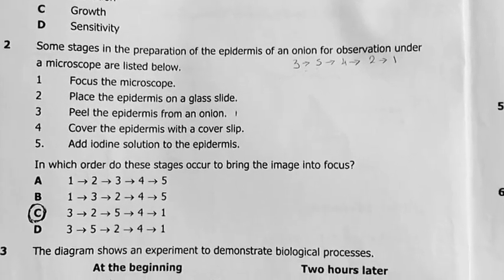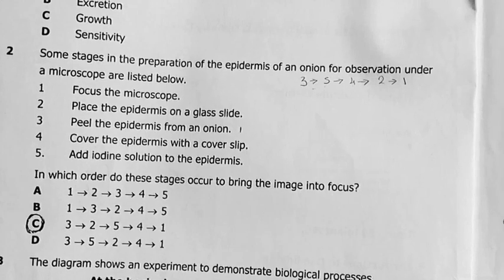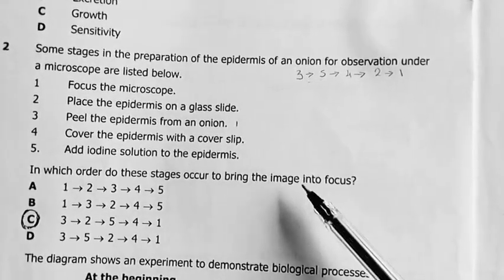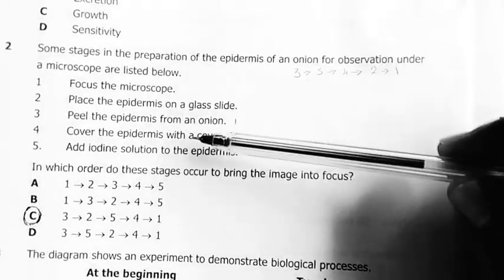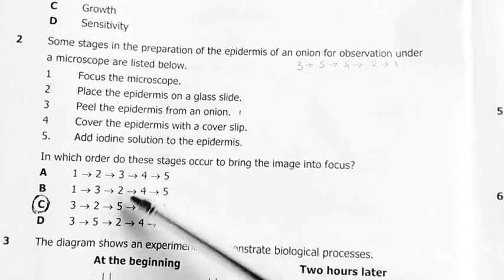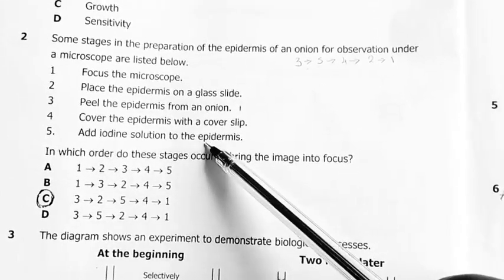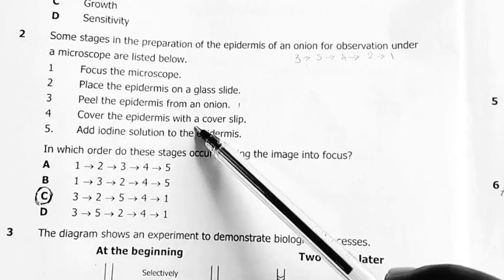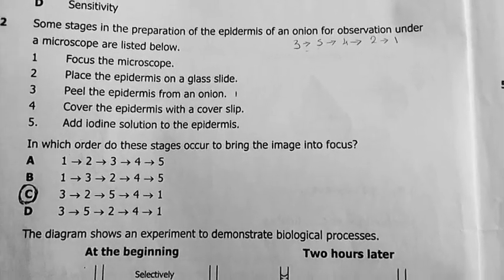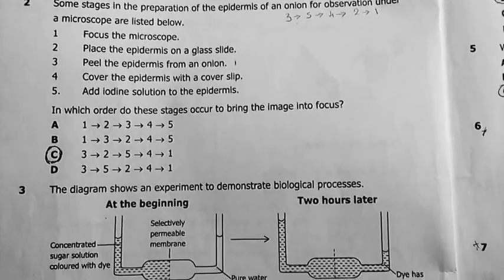Question 2. Some stages in the preparation of the epidermis of an onion for observation under a microscope are listed below. Which order do these stages occur to bring the image into focus? My answer was 3. You always begin by peeling. You peel the epidermis of the onion, then 2, place the epidermis on the glass slide, then number 5, add iodine solution to the epidermis, then 4, cover the epidermis with a cover slip, and then finally, focus the microscope. You add iodine to simply stain the tissue, for the tissue to be more visible. Apart from that, the iodine also helps the cover slip to stick.